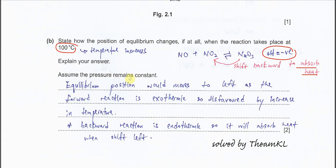Explain your answer. Assume the pressure remains constant. Equilibrium position would move to left, shift backwards or move to left, as the forward reaction is exothermic. Because forward is exothermic, backwards must be endothermic. The forward reaction is exothermic, which is disfavored by the increase in temperature. Or you can actually say backwards reaction is endothermic, so it will absorb heat when it shifts left.